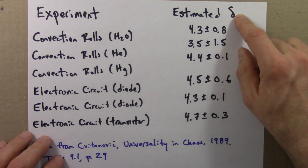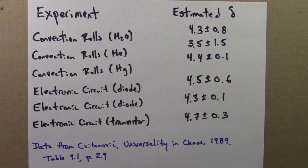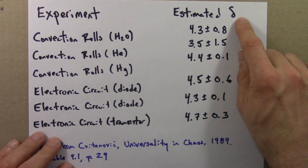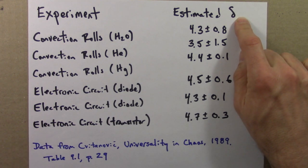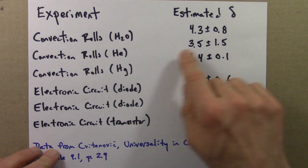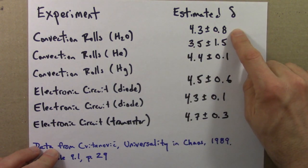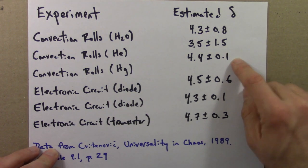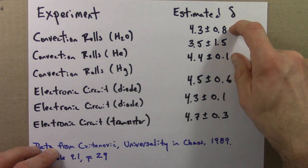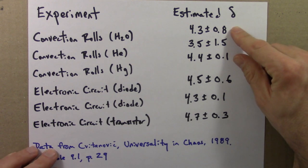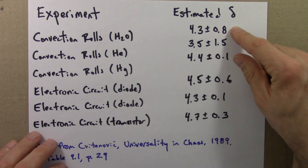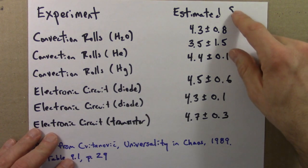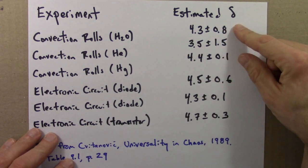Okay, so an enormous amount of work goes into just getting these numbers. So here are three values for delta. This is just the same delta that we discussed for the bifurcation diagram in the logistic equation, but now the parameter is not growth rate of rabbits, but temperature difference in a physical experiment. And so here we see 4.3 plus or minus 0.8, 3.5 plus or minus 1.5, 4.4 plus or minus 0.1. So they're not exactly nailing the predicted value of 4.669, but we wouldn't expect it. And again, for two reasons. One is experimental error, but the second is we don't expect to see 4.669 until we're deep in the bifurcation diagram, and experimental limitations mean we can only see a couple of period doublings.